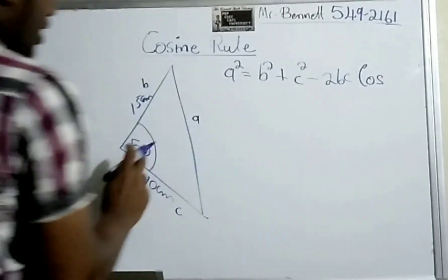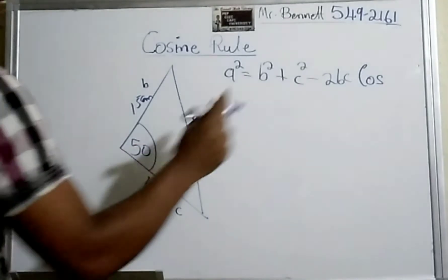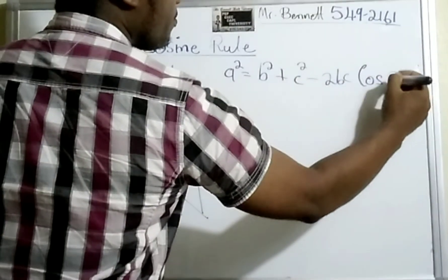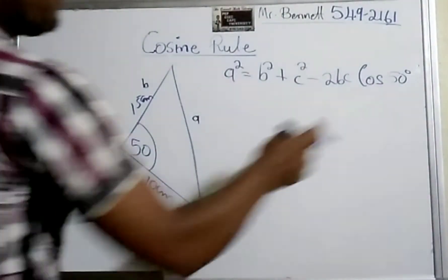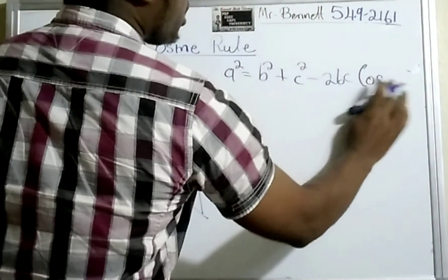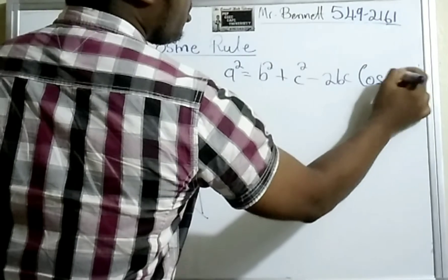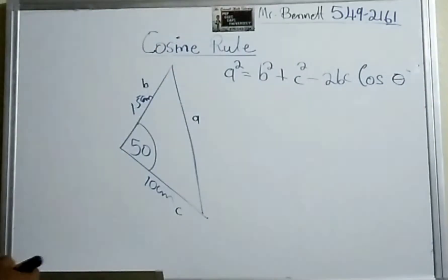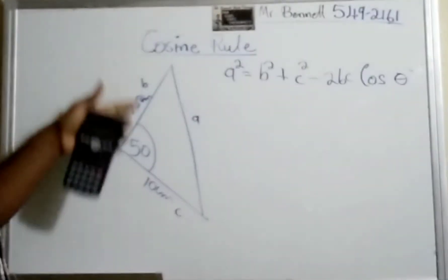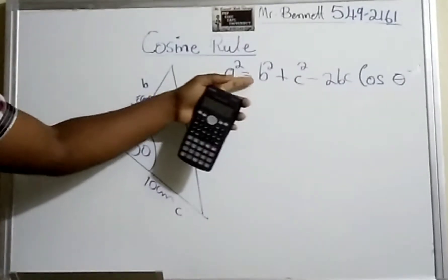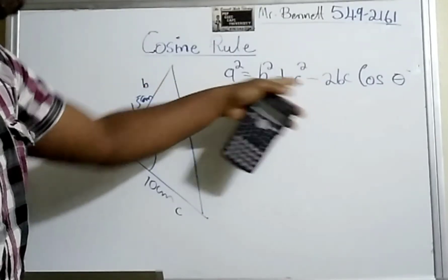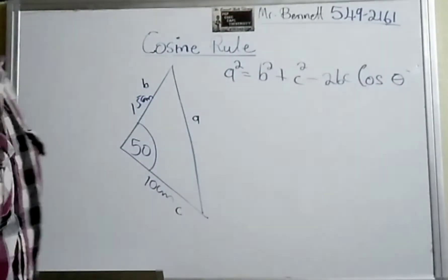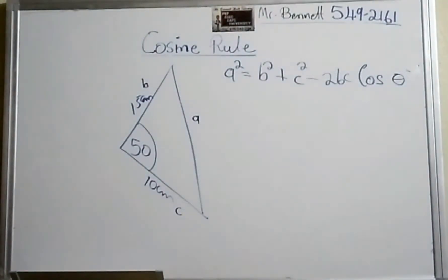The angle that is given is 50, but for argument's sake, let us put theta because it's a general formula. So if we're looking for this side, a² = b² + c² - 2bc cos θ. You see, this formula is very simple.